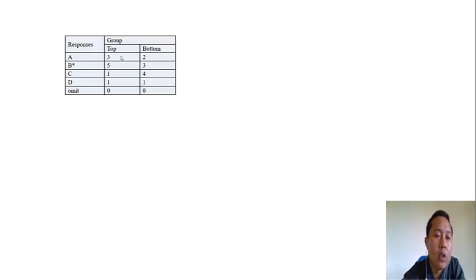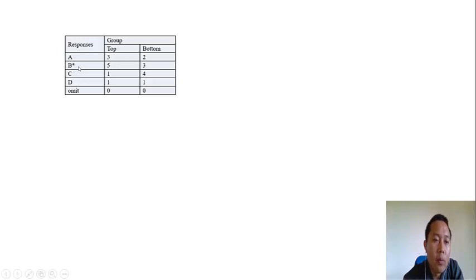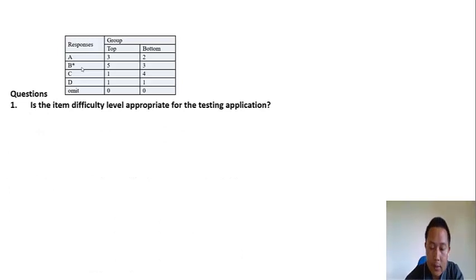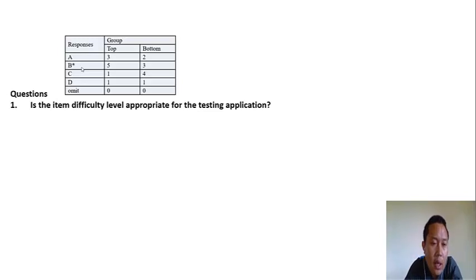In item analysis, what we usually do is select 10 students for the top group and 10 students from the bottom group. From the top group, 5 students got the correct answer (key B), and 3 students from the bottom group got the correct answer.